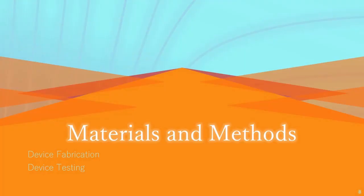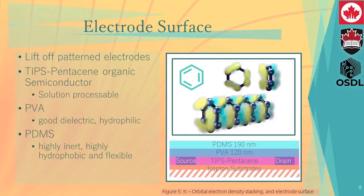Fabricating and testing these devices is a multi-step process that begins with fabricating the electrode surface. Transistor electrodes are patterned on a flexible Kapton substrate using conventional liftoff techniques. Following this, TIPS-pentacene, a small molecule organic semiconductor, is deposited through spin processing. This molecule has the highest charge mobility of most organic semiconductors whilst remaining solution processable, and charge is transmitted through pi stacking — the overlap of pi orbitals in highly ordered crystals. PVA is the first dielectric layer with a high dielectric constant of 9, and PDMS is used as a second dielectric layer as it is highly inert to reduce biofouling.